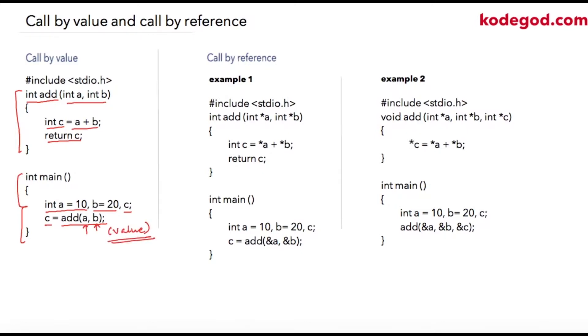So in this example I am passing variable a and b as values. So 10 and 20 will be passed to the function add and those values will be added and stored into c and this c will be returned. Let us take this example. I am defining a function having two integer pointer variables as parameters.